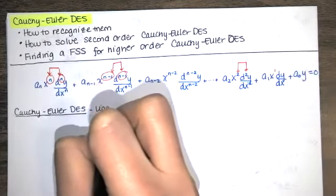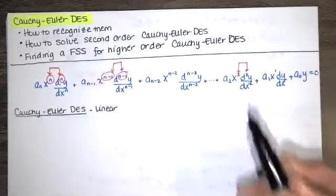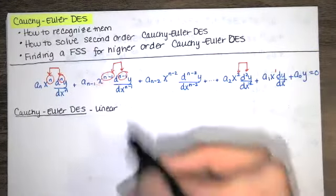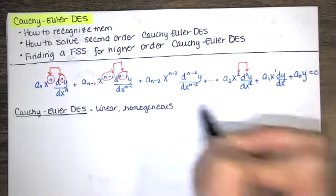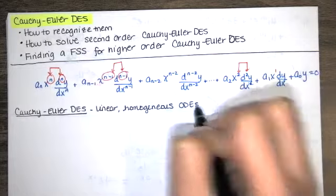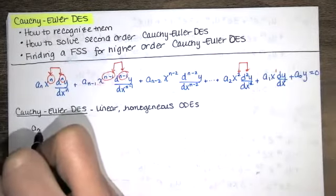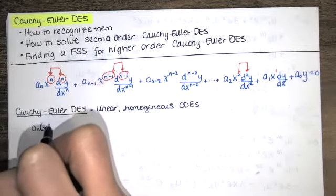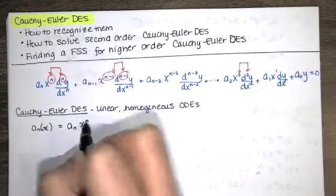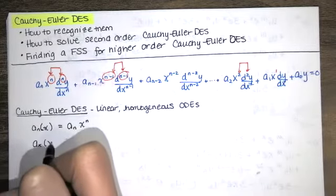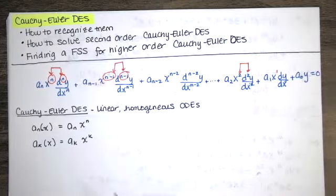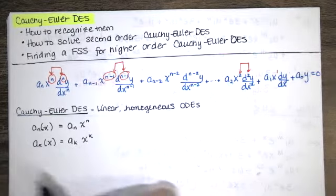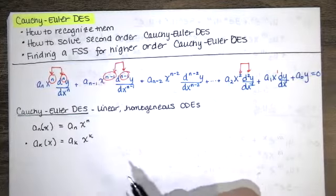These are linear differential equations, and we're going to focus on homogeneous differential equations, at least at first. The coefficient function a sub n of x will be a constant times x to the n. And in general, a sub k of x will be a constant — we'll call it a sub k — times x to the k power. The order of the derivative and the power of x multiplying it match.